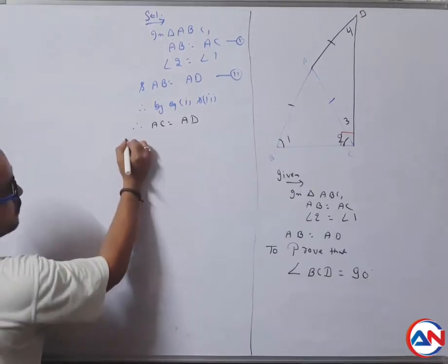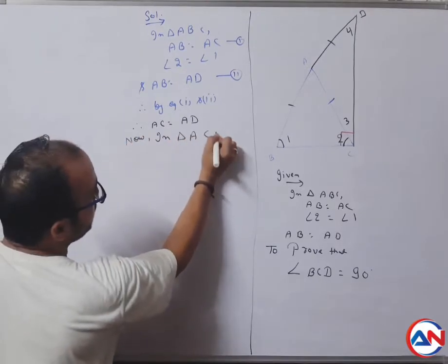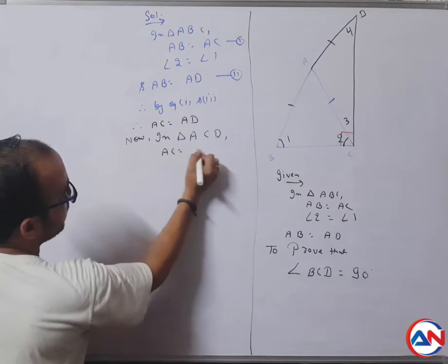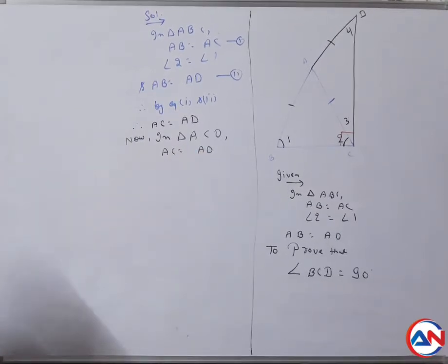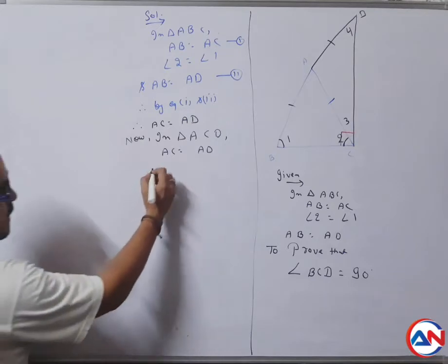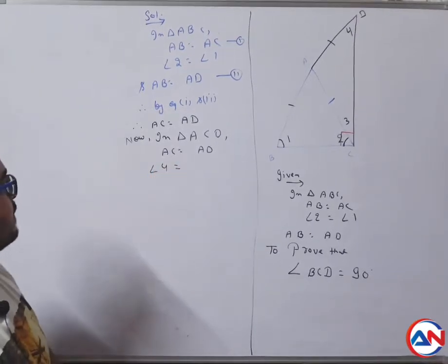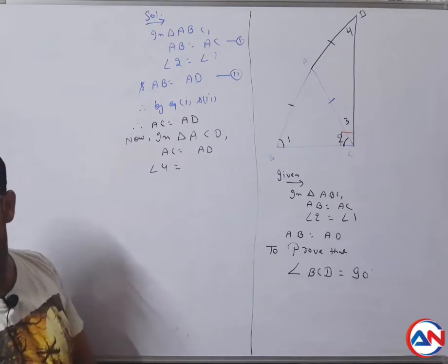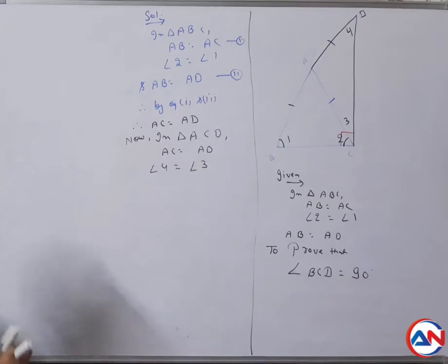Now in triangle ACD, AC equals to AD. Why? Opposite of AC is angle number four, and opposite of AD is angle number three.